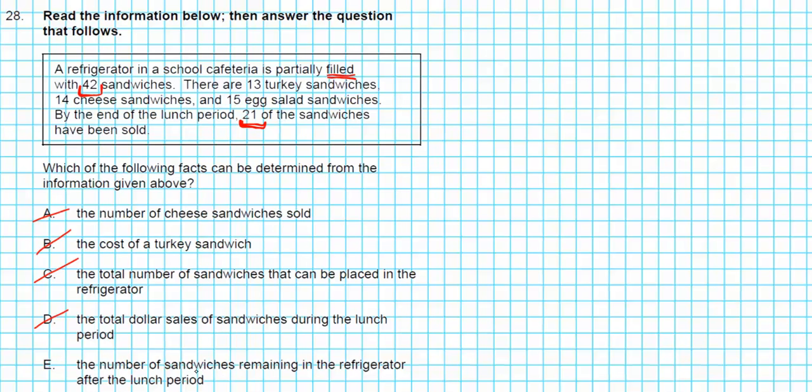Option E says the number of sandwiches remaining in the refrigerator after the lunch period. Can we calculate that? There were a total of 42 sandwiches, 21 were sold. So what does that tell you? You subtract it. What does this number represent? The number of sandwiches remaining. So option E can be determined. Our answer for 28 is option letter E.